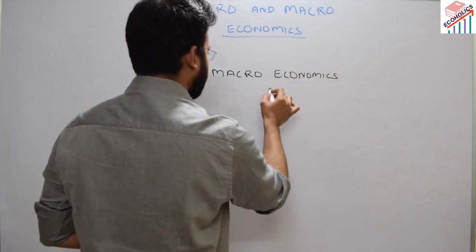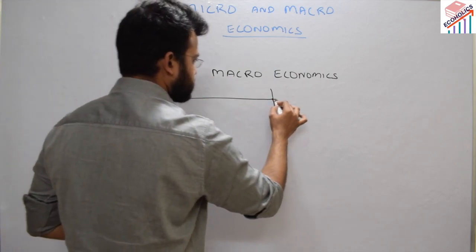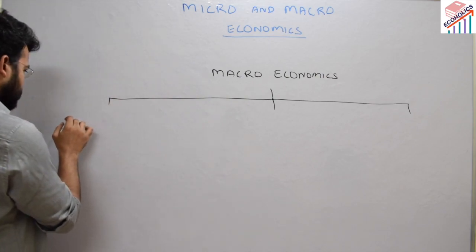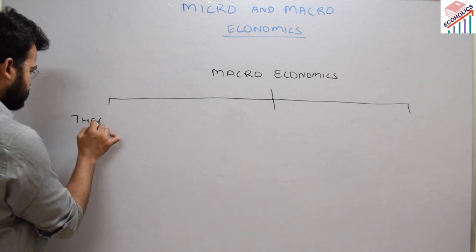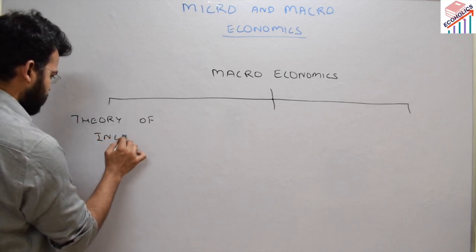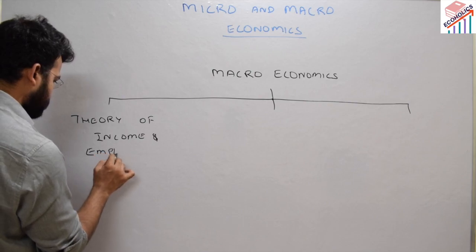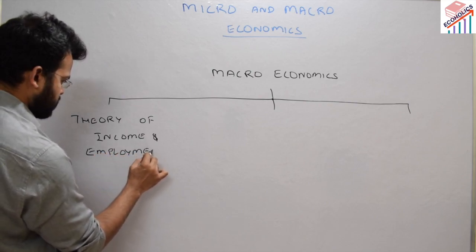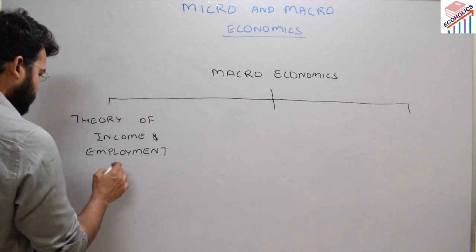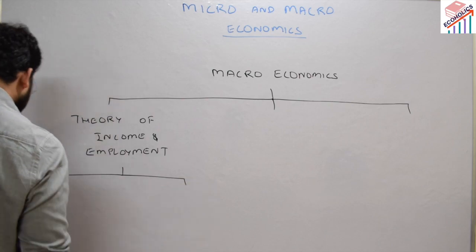Under macroeconomics, we have divided it into three important heads. The first one is the theory of income and employment, which includes two important theories.